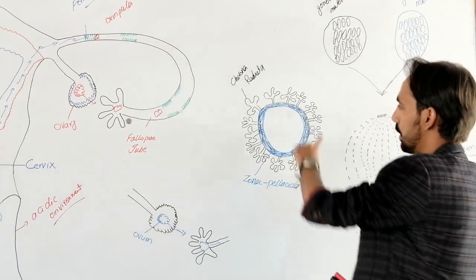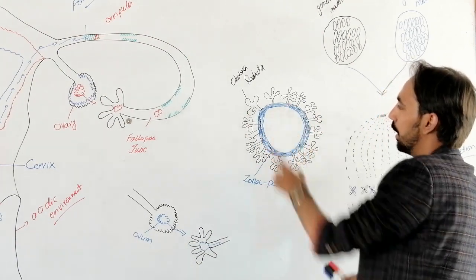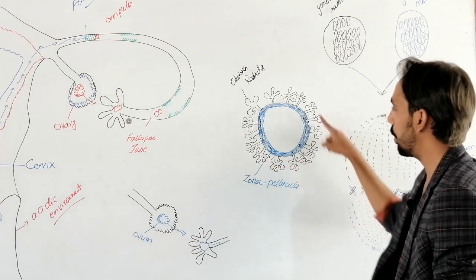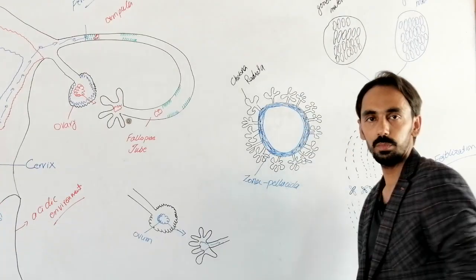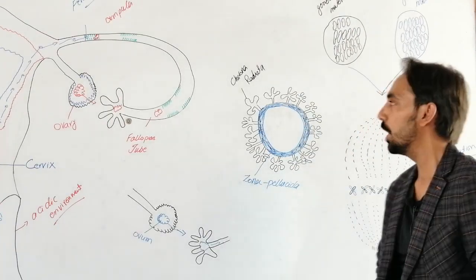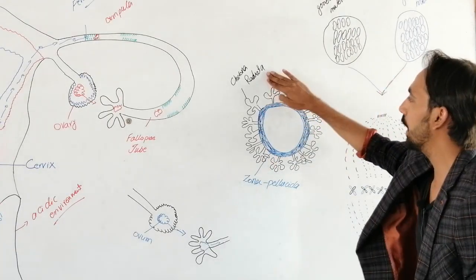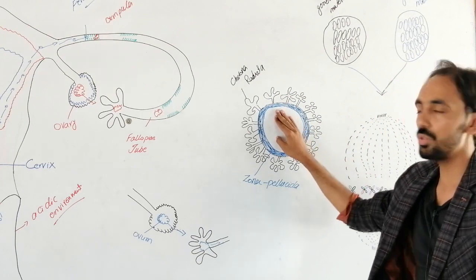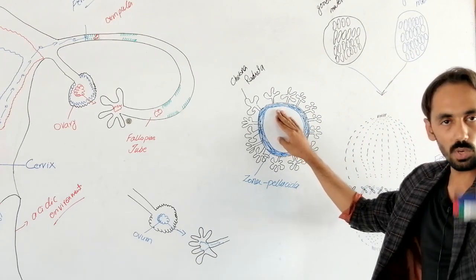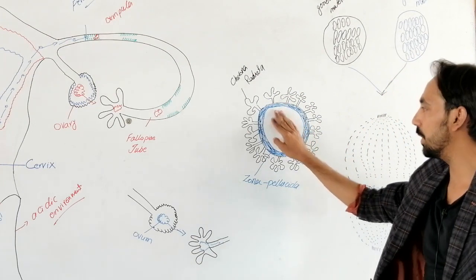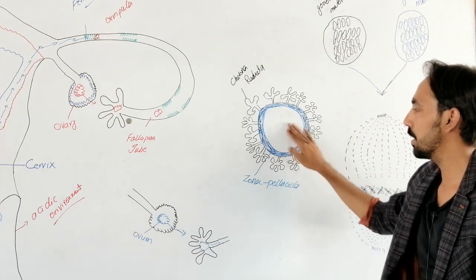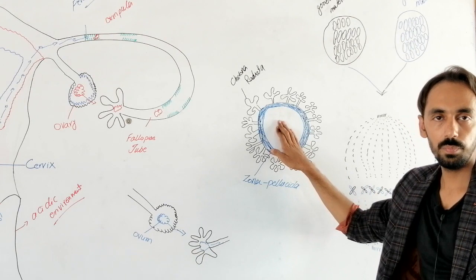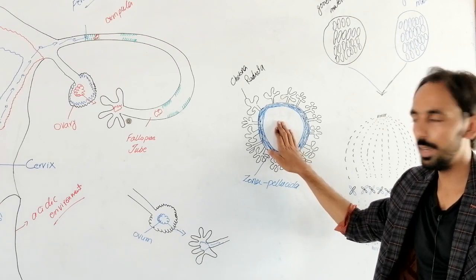After the zona pellucida, there are these finger-like projections. So these corona radiata and zona pellucida are actually for the protection of the cell underneath.